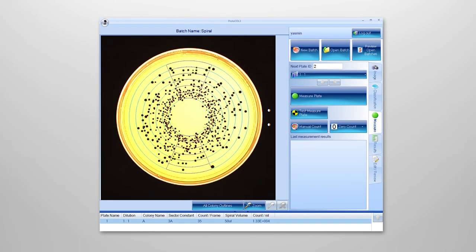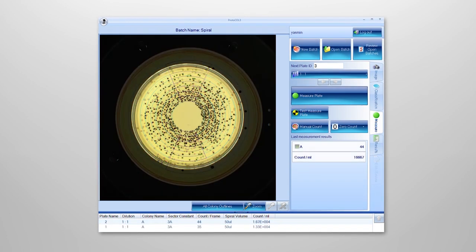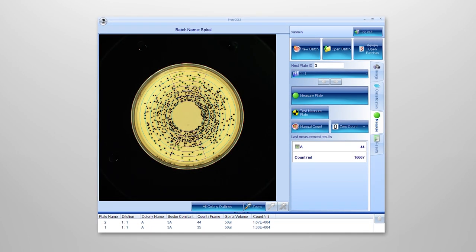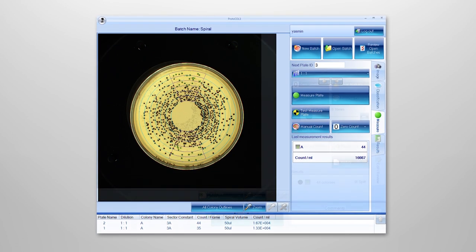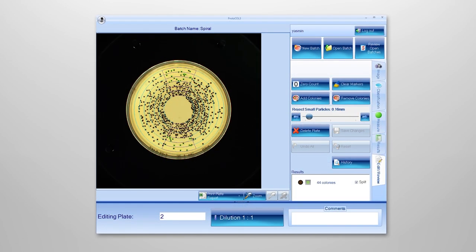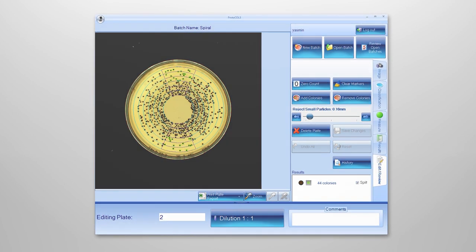Spiral plates are also perfect for use with automated colony counters. Using an automated counter, colony counts are performed in seconds and parameters such as plate identification and dilution factor are recorded, together with an image of the plate for complete traceability.